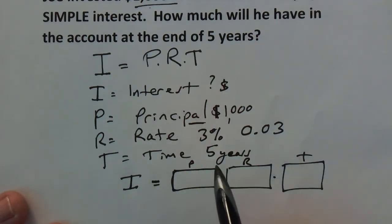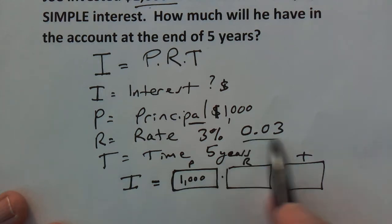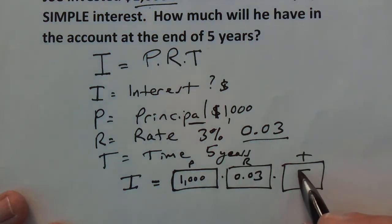We don't know the amount of interest, that's what we're trying to figure out. The principal is $1,000 so I'm going to put the 1,000 there. The rate we already determined, we're going to write it as a decimal .03 and the time in this case is five years.